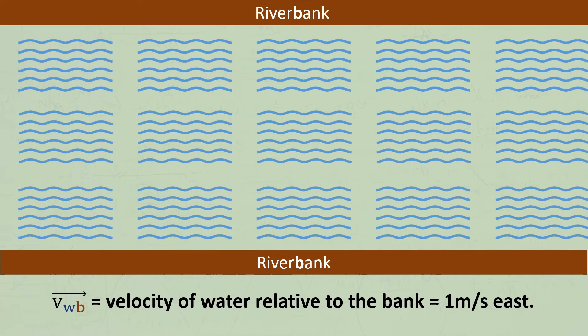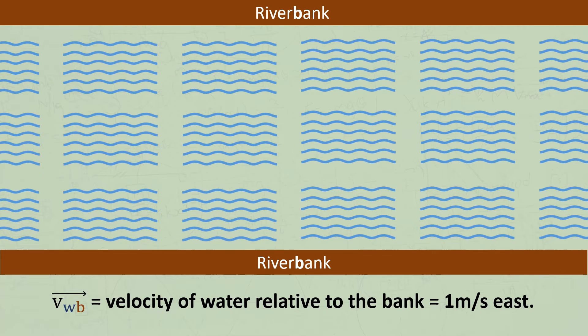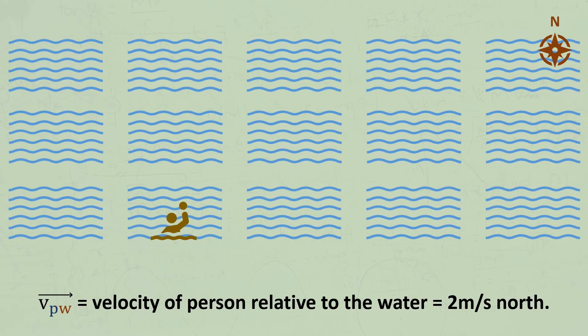The velocity of the water relative to the bank is 1 metre per second. Please remember that the first letter represents what's moving, and the second letter is the reference frame it's moving relative to. The velocity of the person relative to the water would be simple if the water wasn't moving, but what if it is moving?